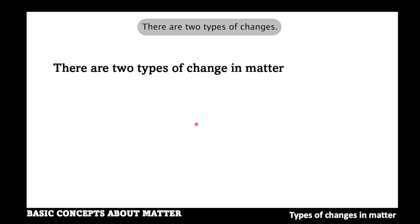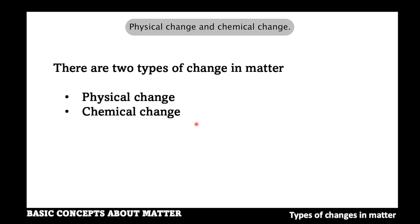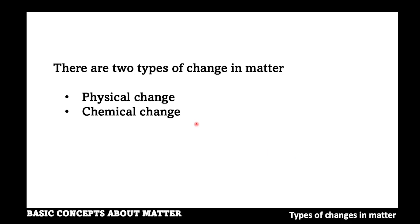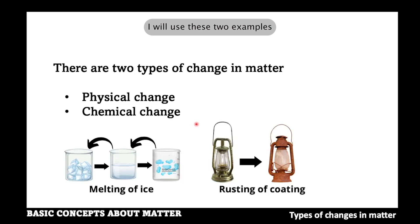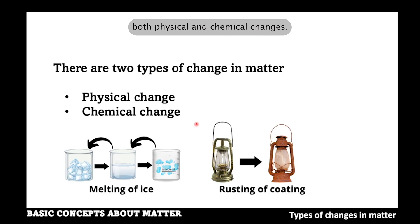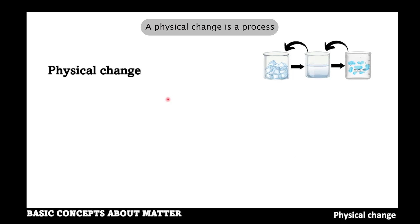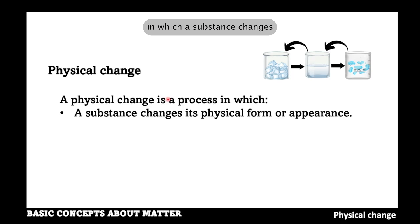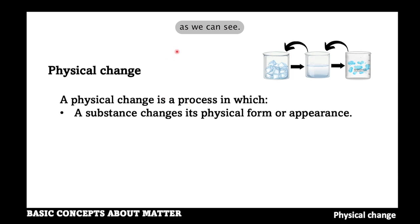There are two types of changes: physical change and chemical change. I will use two examples to explain both physical and chemical changes. A physical change is a process in which a substance changes its physical form or appearance, as you can see.